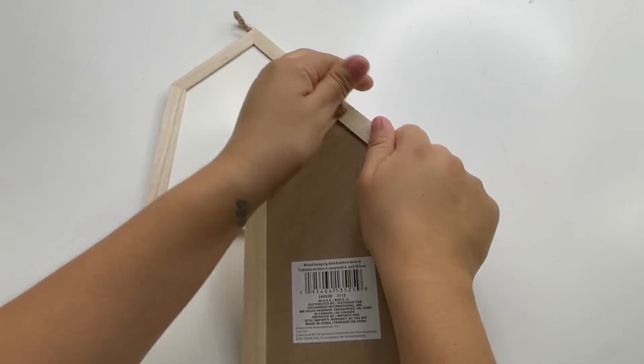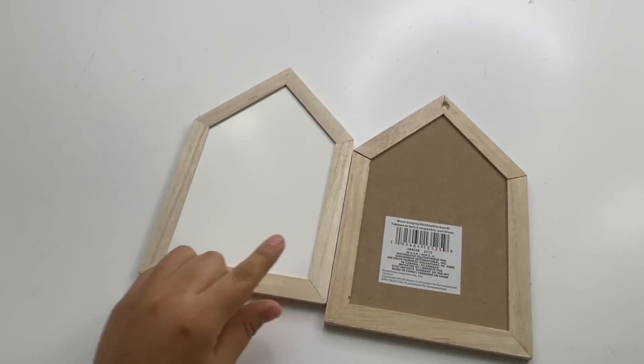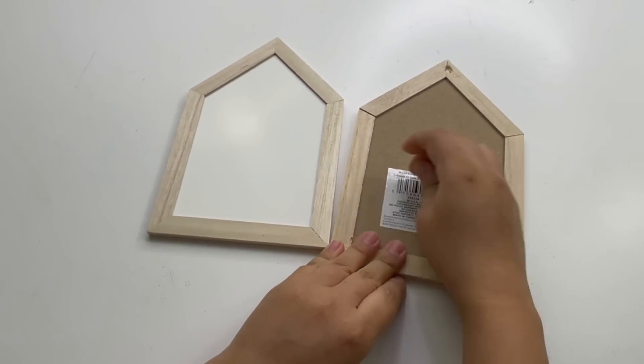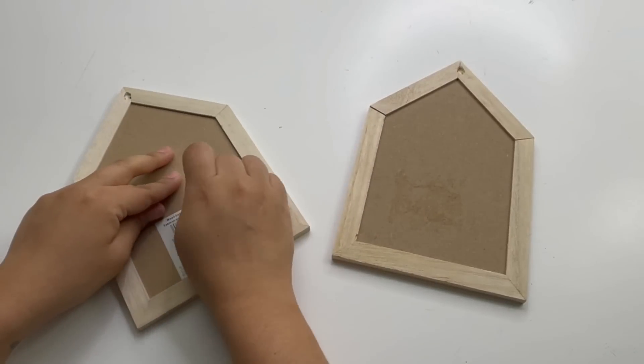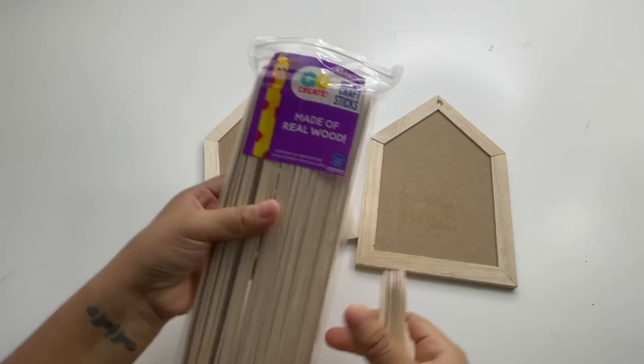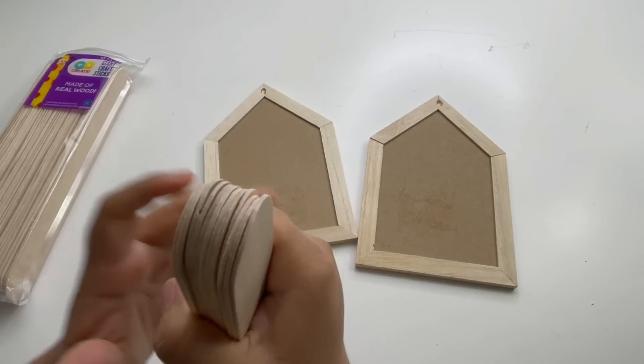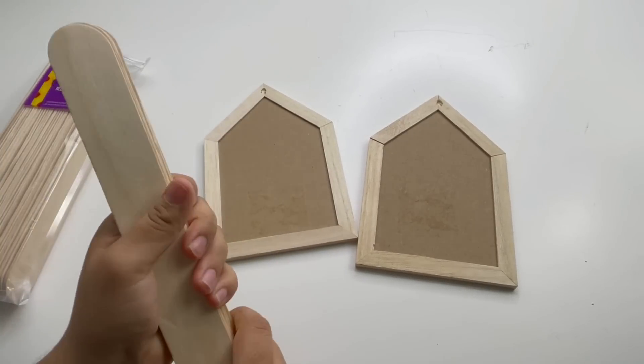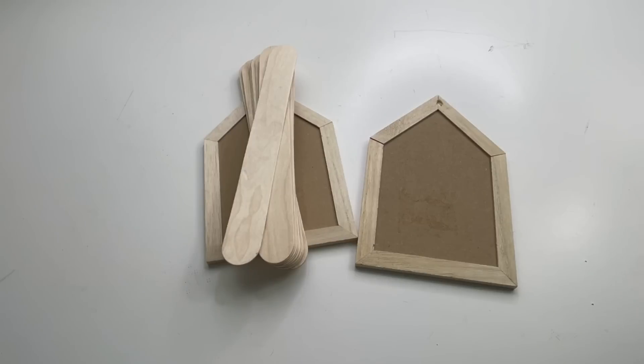I will be using two of these Dollar Tree little chalkboard houses and some large popsicle sticks. The large popsicle sticks I got from Walmart. Now this DIY was inspired by Barbara the Country Lily DIY Decor. She did something similar like this but she used more of these chalkboards, and I will be using popsicle sticks instead.